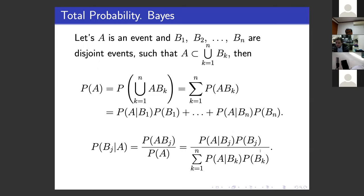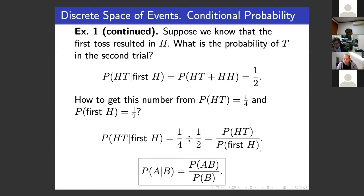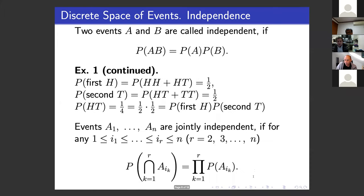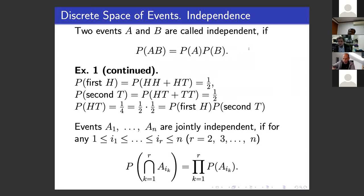How can we prove that events are independent? There is a definition: two events A and B are independent if P(A ∩ B) = P(A) · P(B). To prove independence, you calculate the joint probability and each individual probability and verify this equality holds. There is no other way to prove the independence of two events.